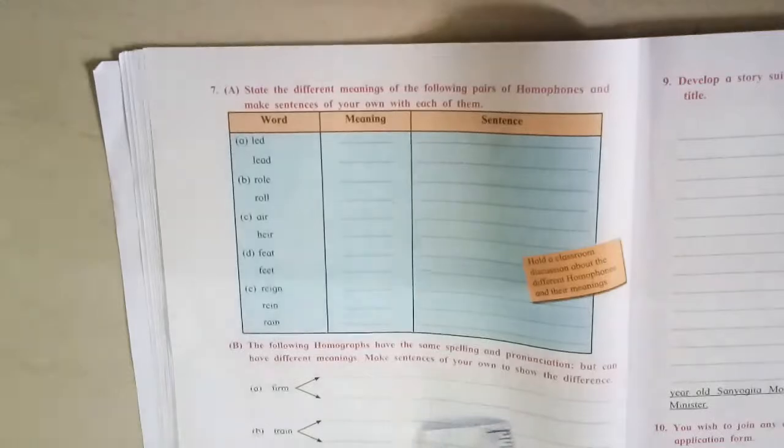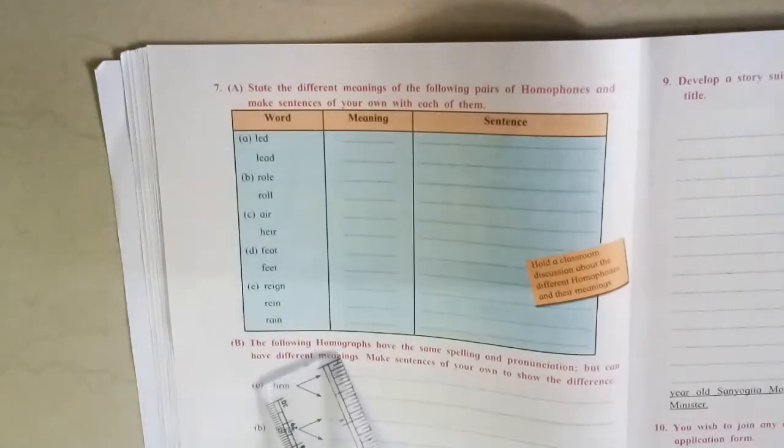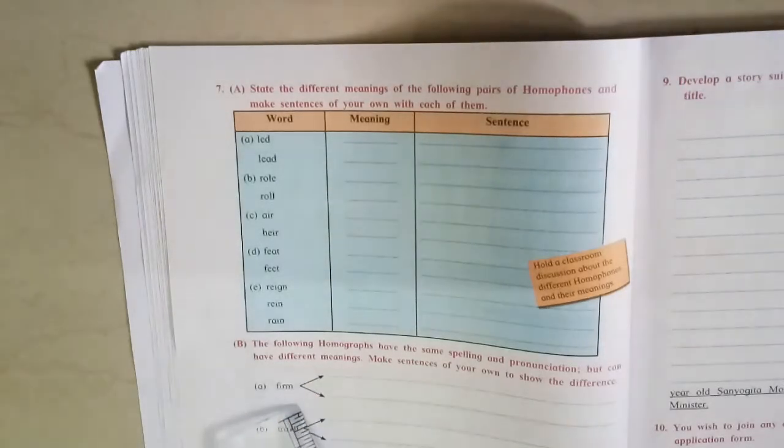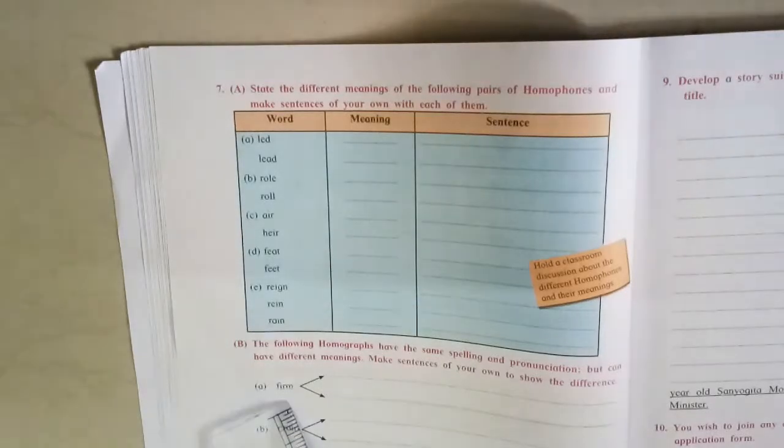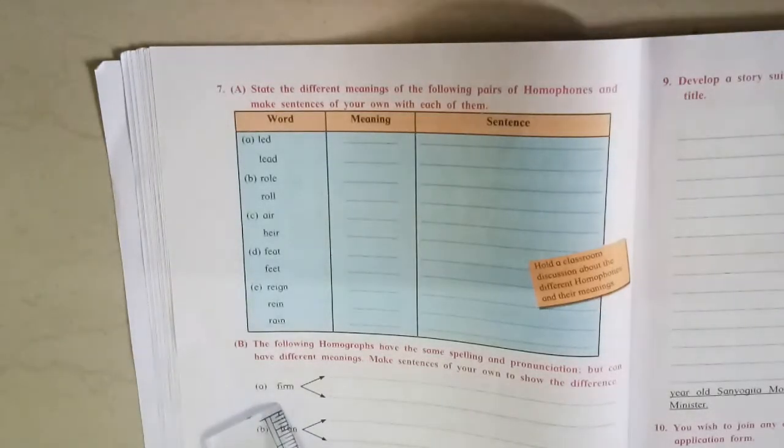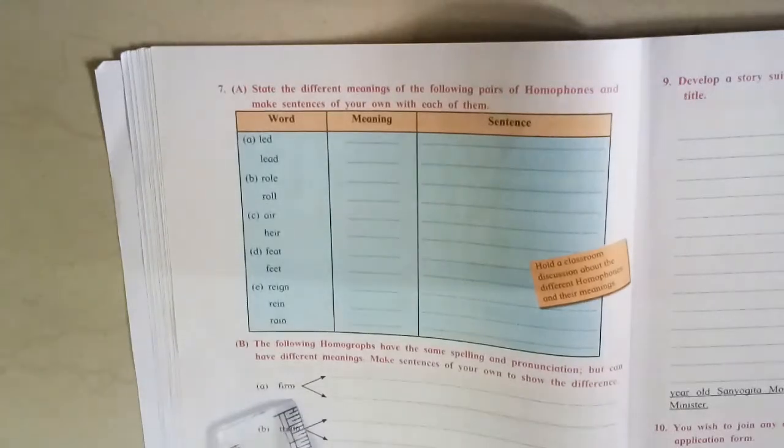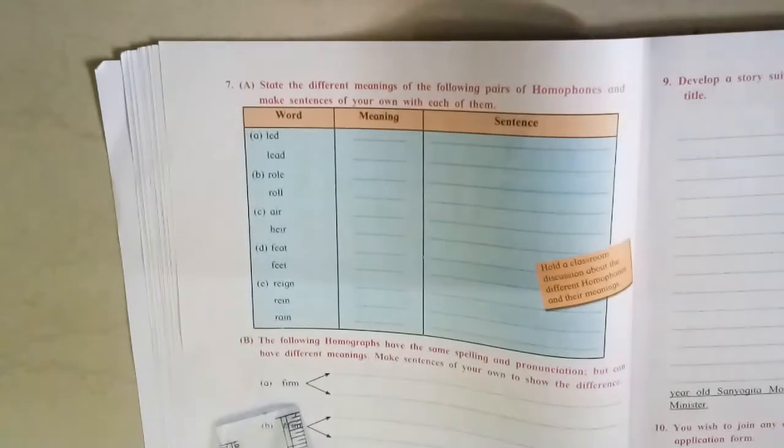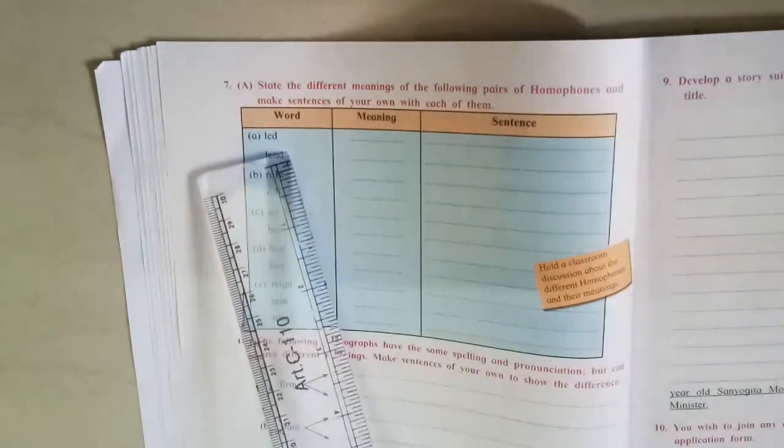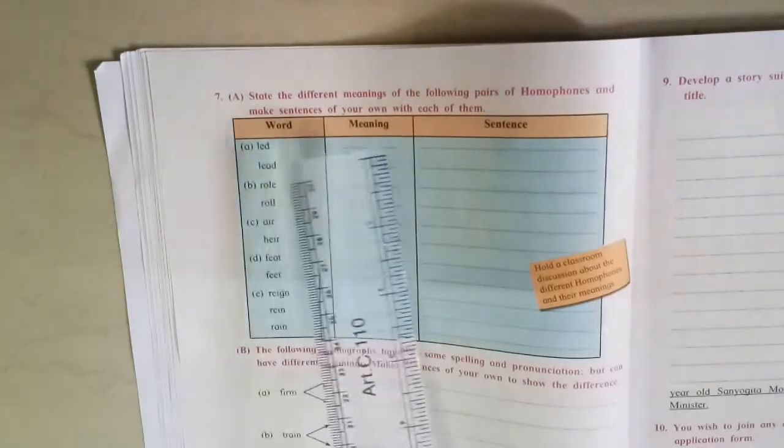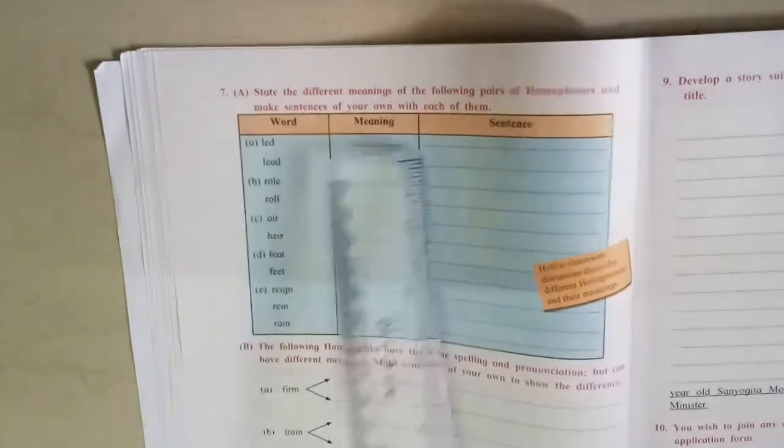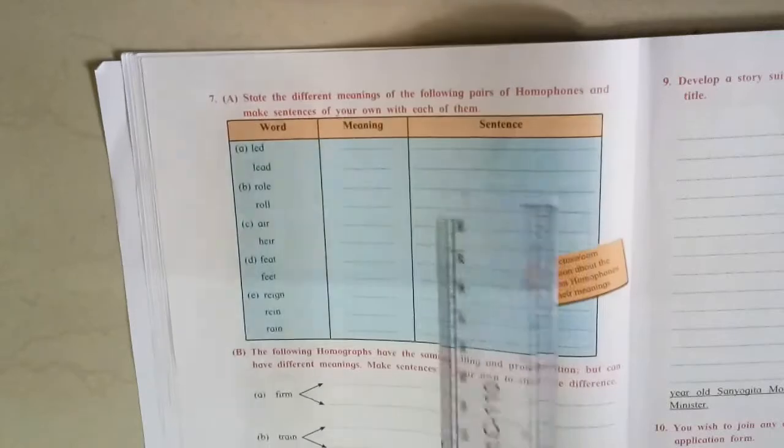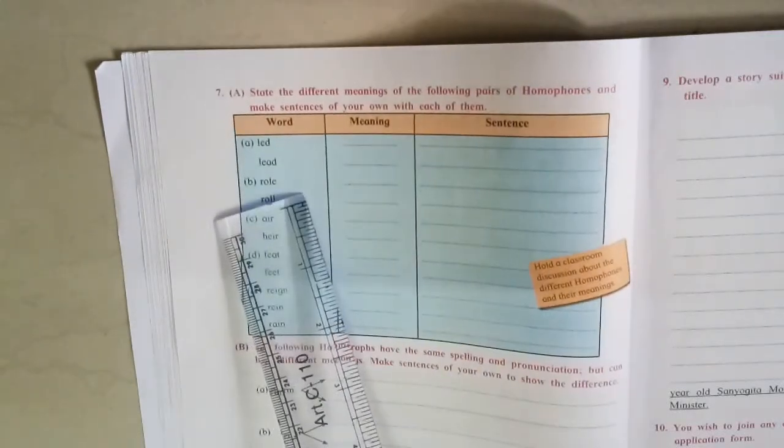And second, here given homographs. Homographs means two same spellings, but here two different meaning words. Same spelling and pronunciation also same, but meaning different. Two same words. You have to make two sentences using word form. Now see first one: Led. First led means first participle - lead, led, led. Example: He led the life of virtue. Make your own sentence. And lead also - leader, lead.